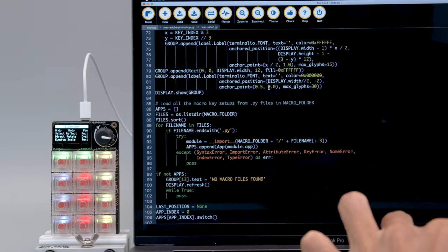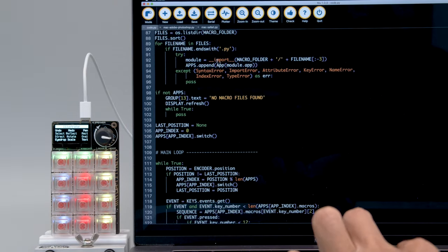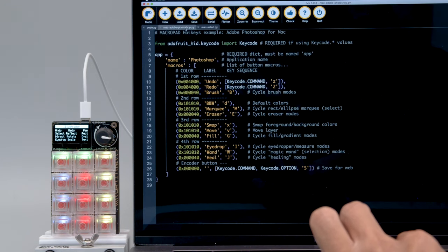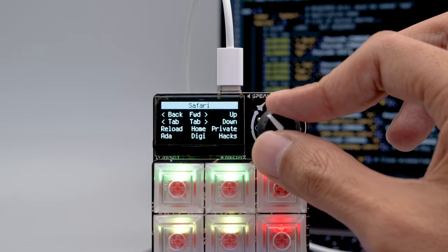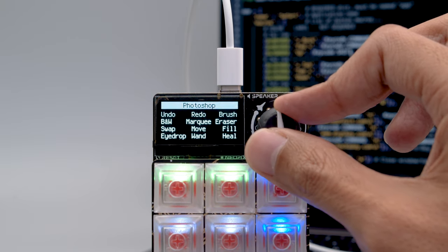The demo code handles all of the heavy lifting so you can easily create your own macros. Just modify the existing file or create your own using this as a template. You can switch between different macro configurations using the rotary encoder.